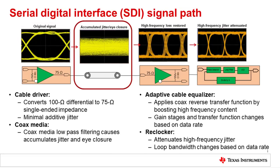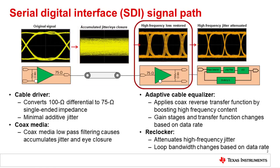After the signal goes through 75 ohm coax media the signal information is indistinguishable. This is because the high frequency components of the signal get heavily attenuated.